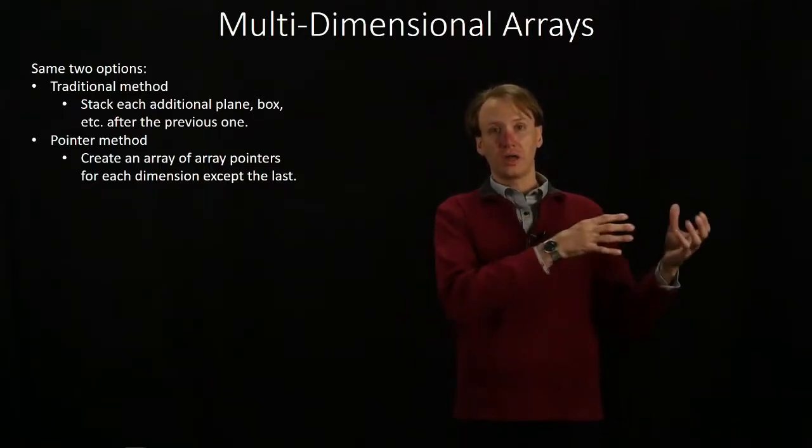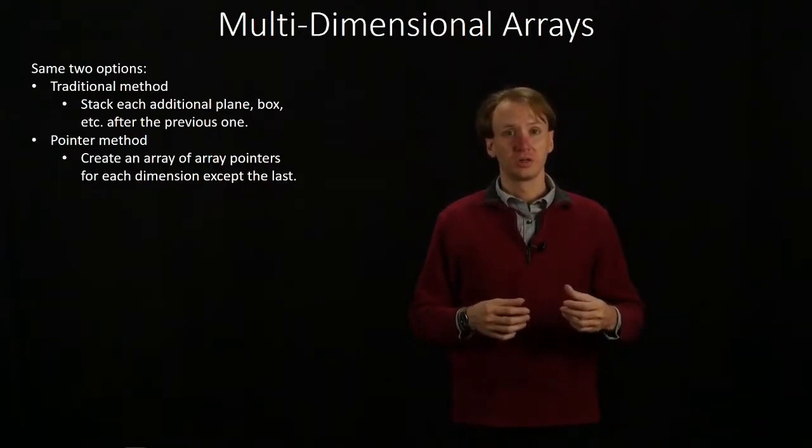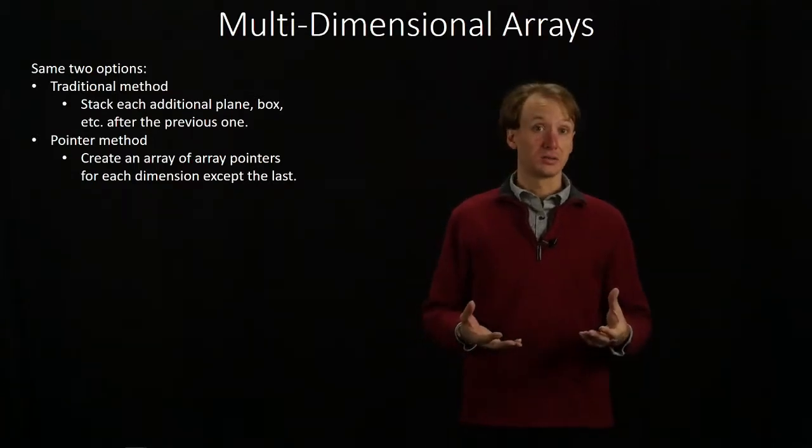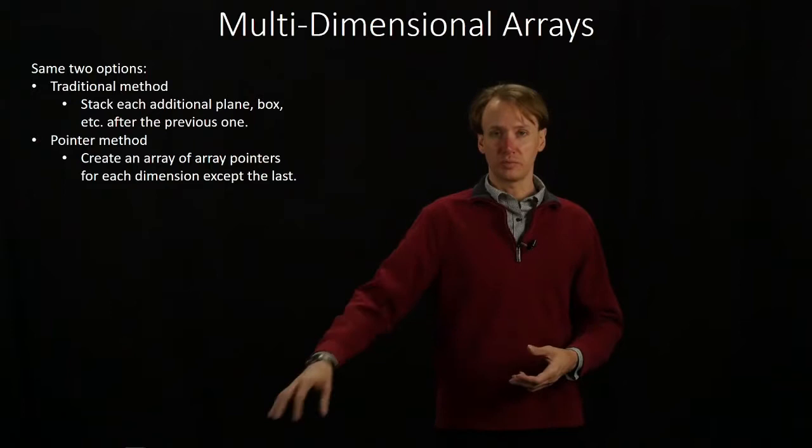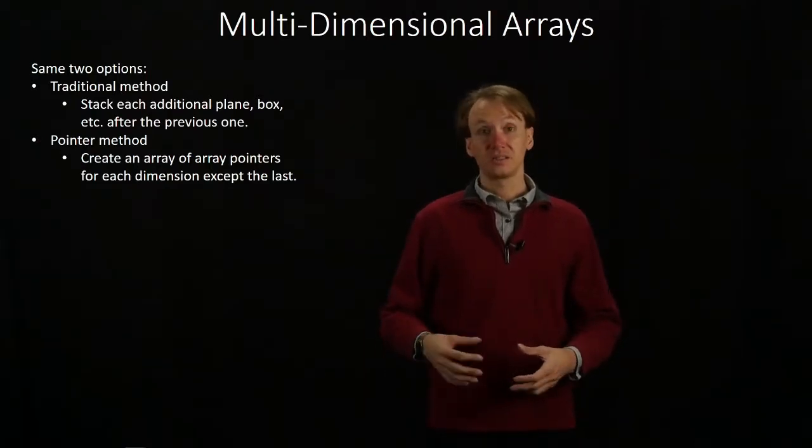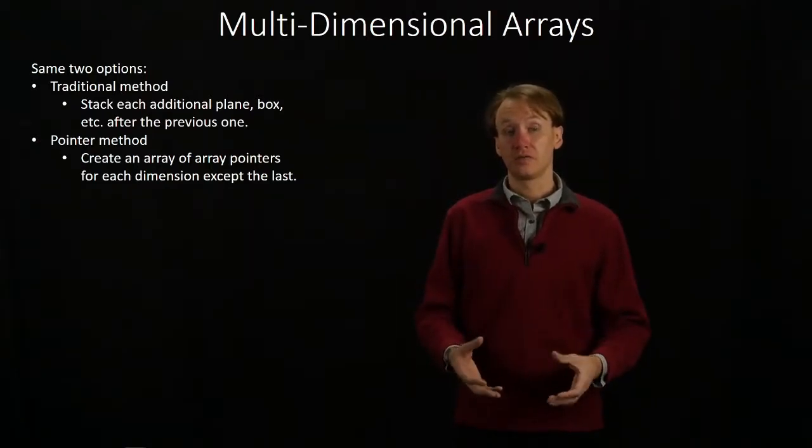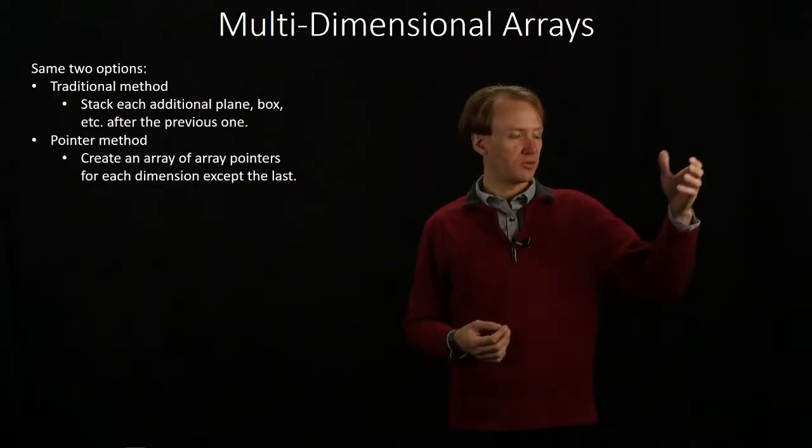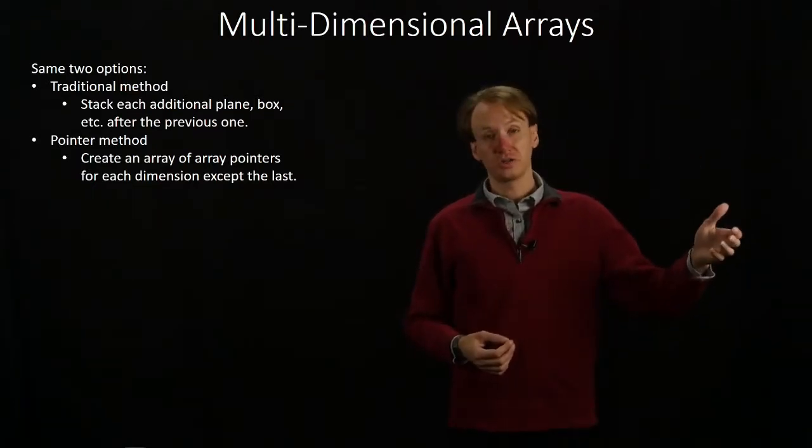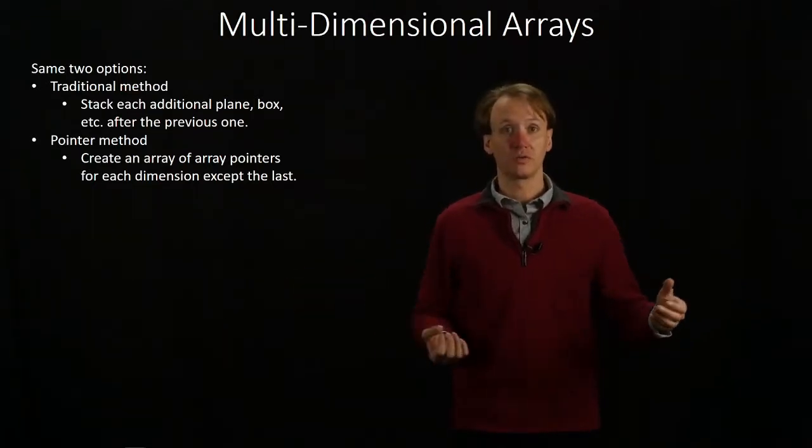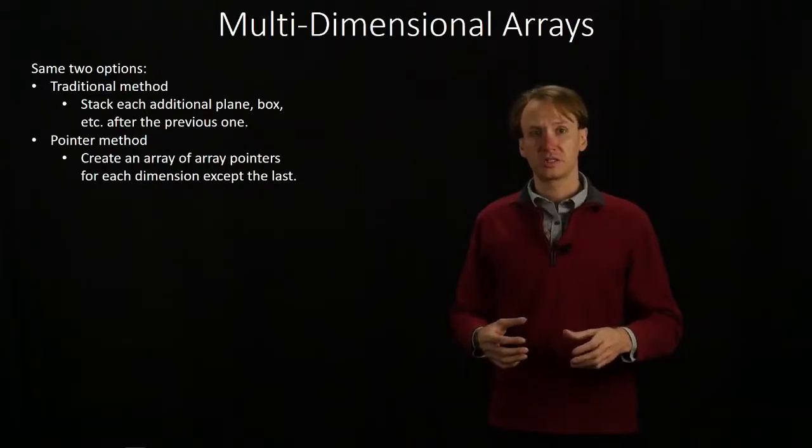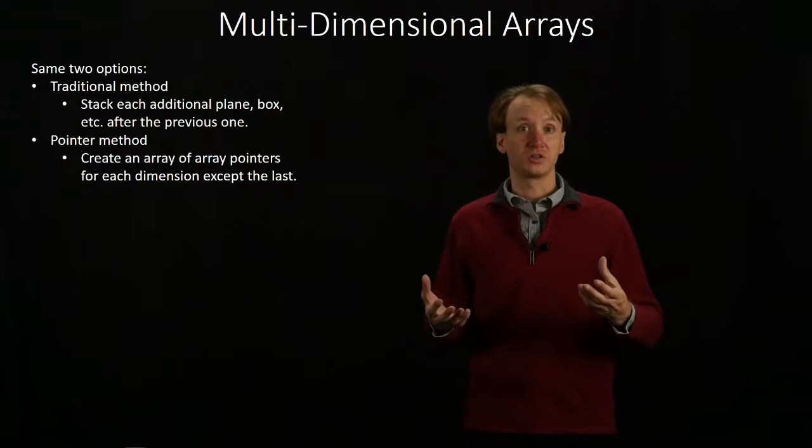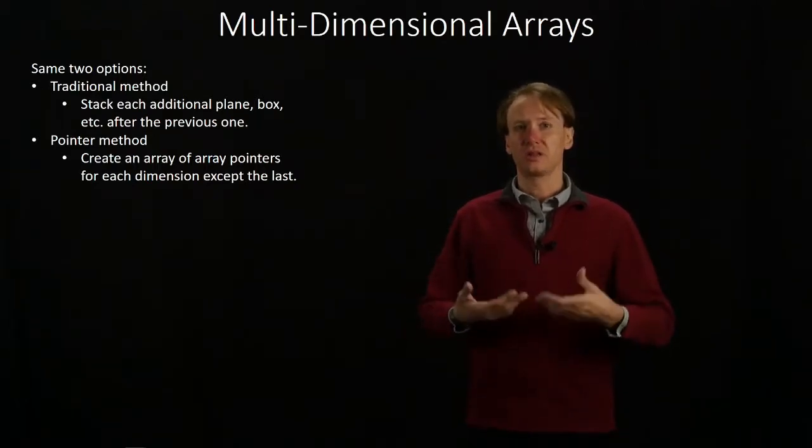And now I'll have another array that would be pointing to all of the planes that I've got. So that array of pointers, where they were all pointing to multiple rows with data, is enough to implement one plane. If I want to have multiple planes, then I would have an array of planes where each element is pointing to one of those arrays of rows.